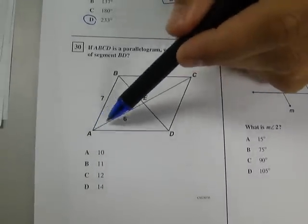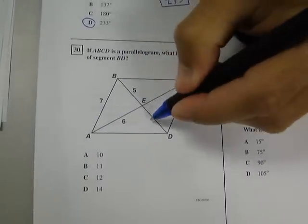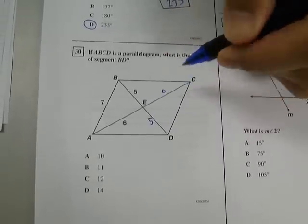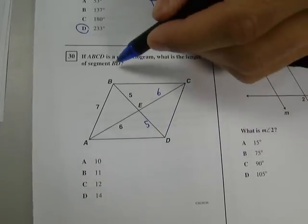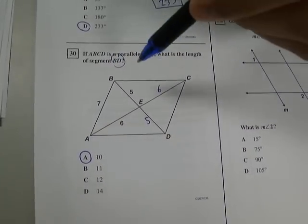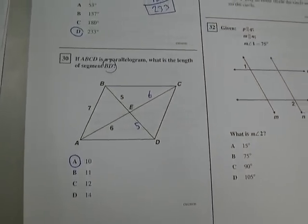And what that means is that this diagonal cuts this diagonal exactly in half. Therefore, if this part is five, this part has to be exactly the same. And if this part is six, then this part has to be exactly the same too. So BD is going to be 10, which is what it's asking. So BD is 10. Why? Because in parallelograms, diagonals bisect each other. Good thing to know.